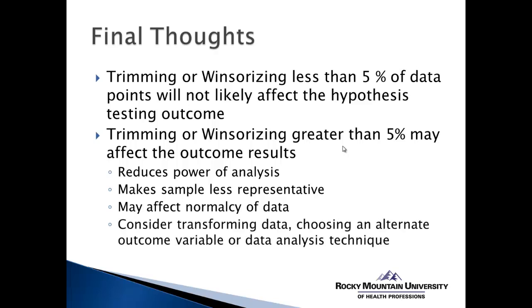So when we have greater than 5% that we feel needs to be trimmed or Winsorized, we should probably avoid that for those three reasons, and instead consider transforming the data in some way — converting it to a different kind of alternate outcome variable. For instance, instead of reporting pounds of weight loss, we might report a percentage of weight loss. We might also consider transforming the data using a method called bootstrapping, or we might have to use an alternative analysis technique — instead of parametric data analysis, we might have to use a nonparametric data analysis technique.